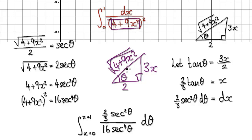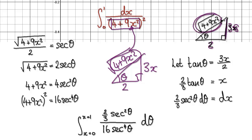You've in a way created this thing here. If you make this to be 3x and then this to be 2, then the hypotenuse has no choice but to be this.